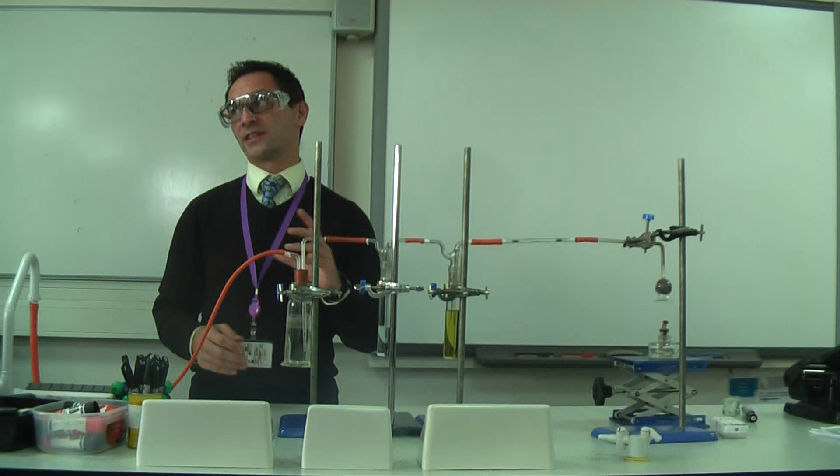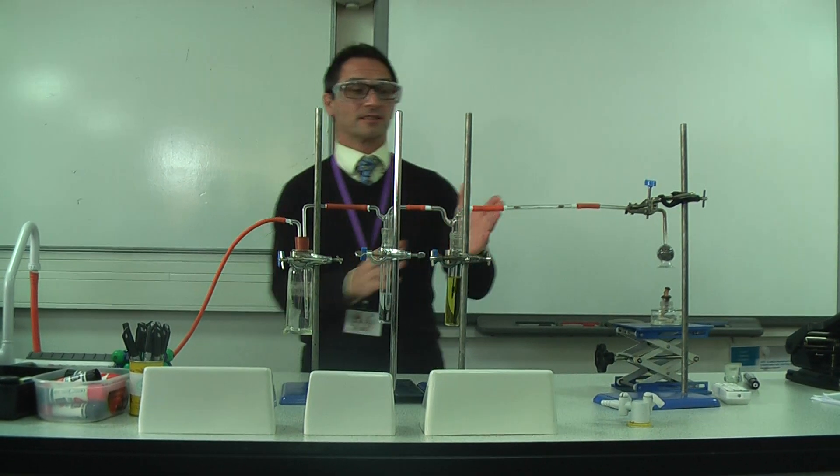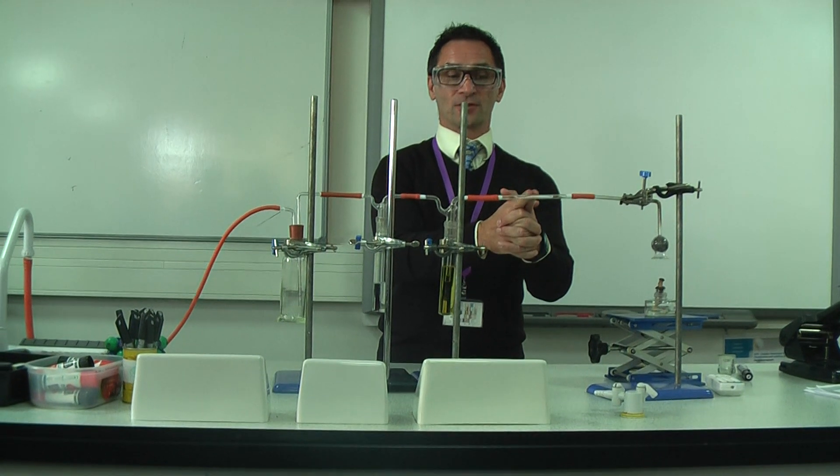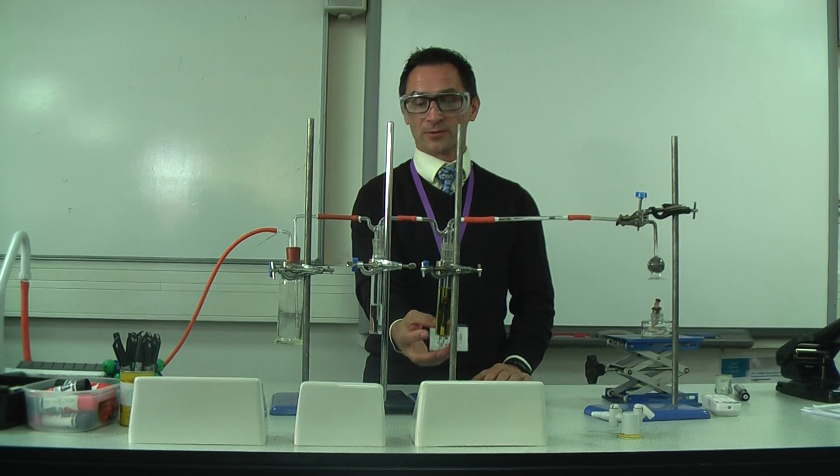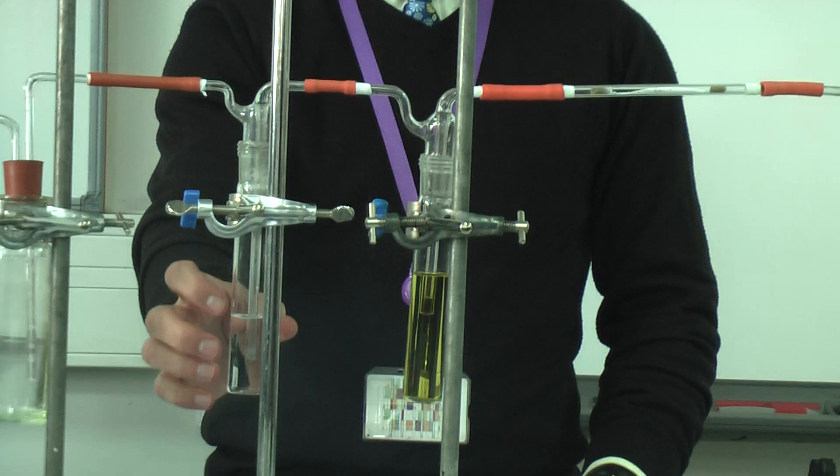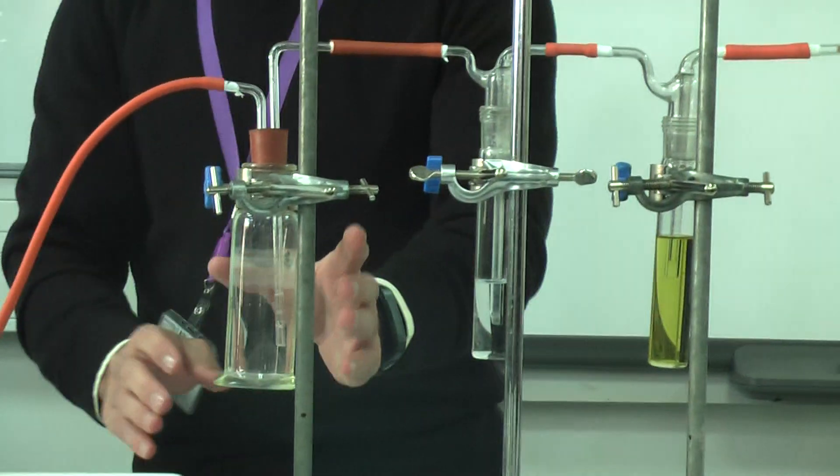Okay, so what we're going to do is look at the products of burning. So what I've got is some anhydrous copper sulfate, I've got universal indicator which we're going to bubble through, we've got some lime water which will bubble through, and then this is just a trap.